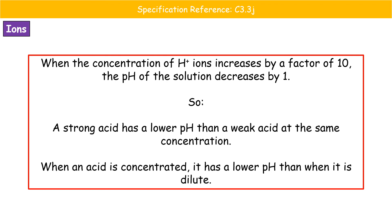One of the maths questions they can ask is what the new pH would be when hydrogen ion concentration changes. The pattern to remember: if hydrogen ions increase by a factor of 10, pH decreases by 1. So a solution at pH 3, with hydrogen ion concentration increased by 10, goes to pH 2. Increased by 100 (which is 10 × 10) drops 2 pH values — from pH 3 down to pH 1.